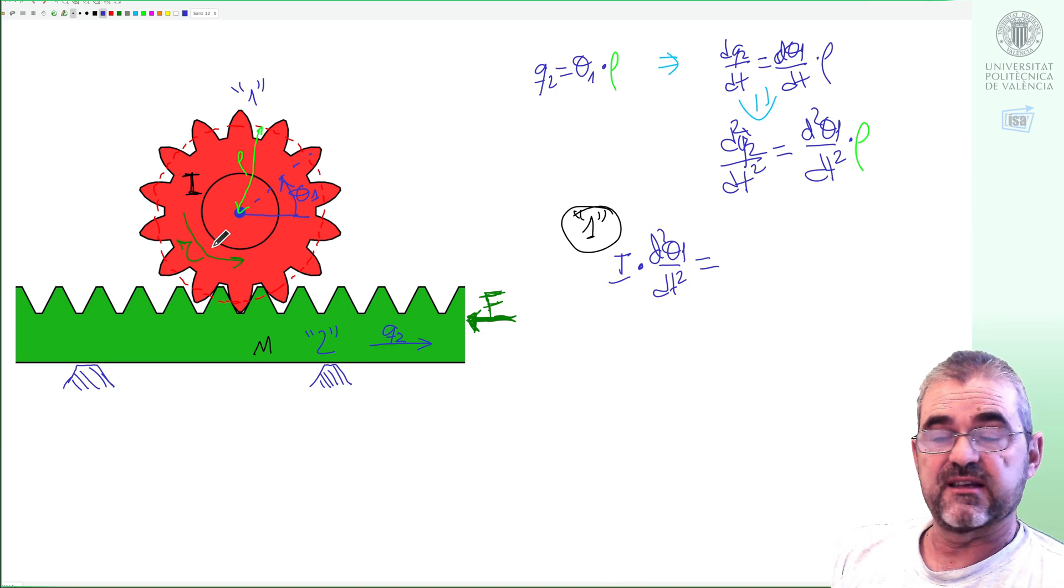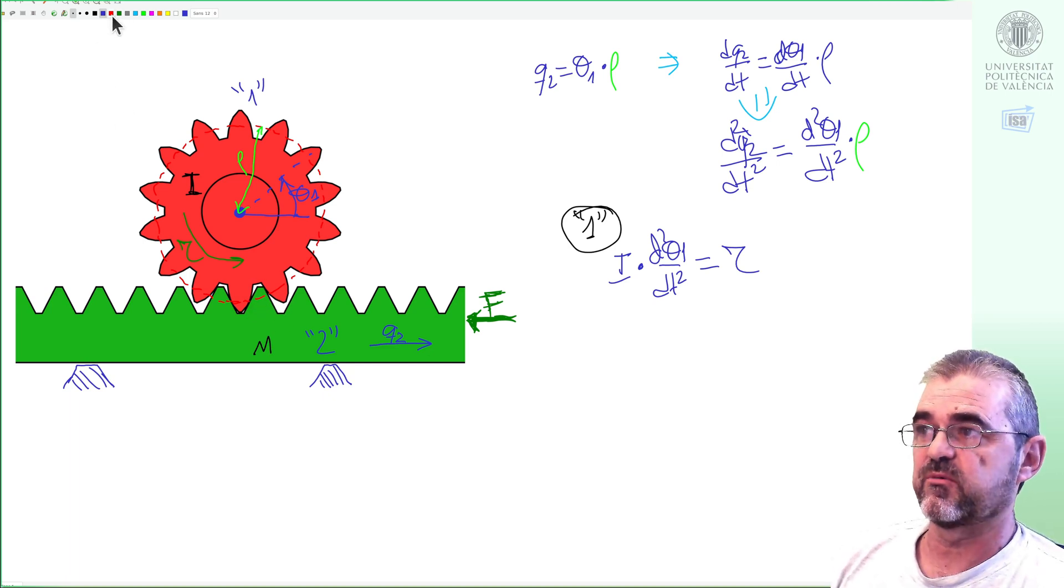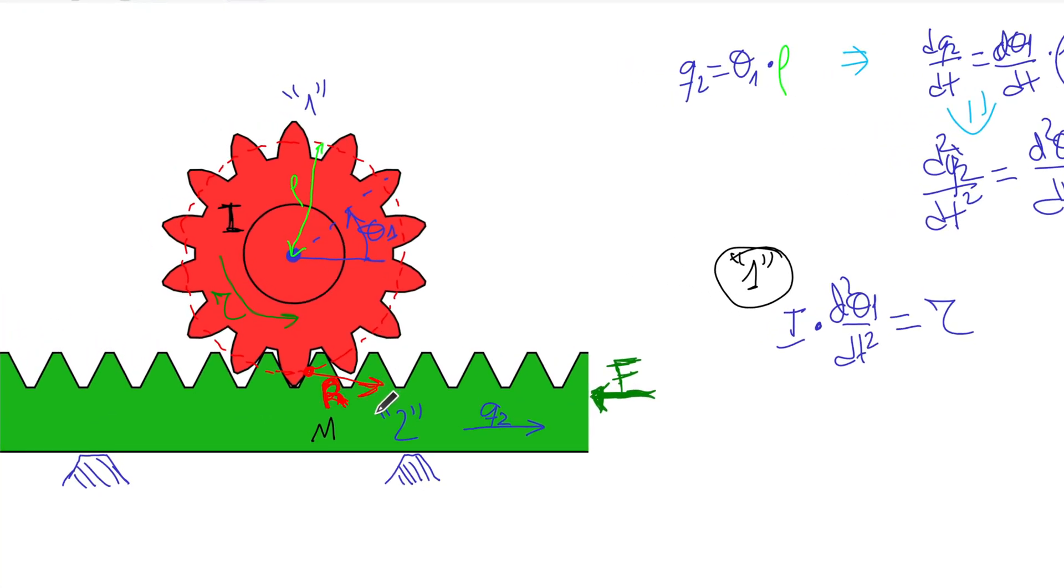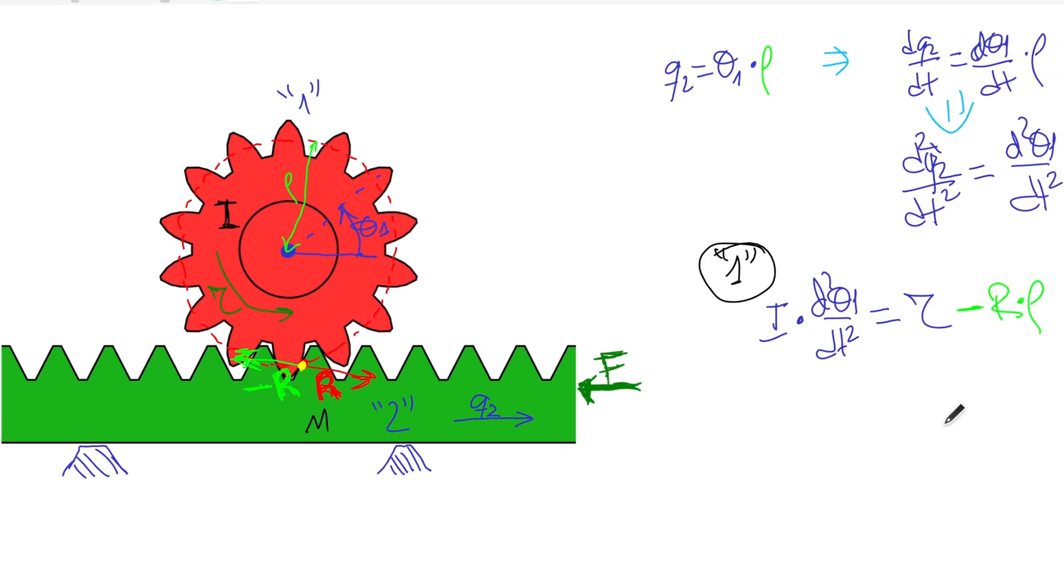If somebody exerts torque tau in the rotation axis, it will push towards the right hand side the green body with a force R at the contact point. Conversely in the torque balance, the opposite reaction force will be how the green body pushes the red one. The horizontal component of this reaction force will produce a torque force by distance to the rotation axis, minus reaction force times radius.